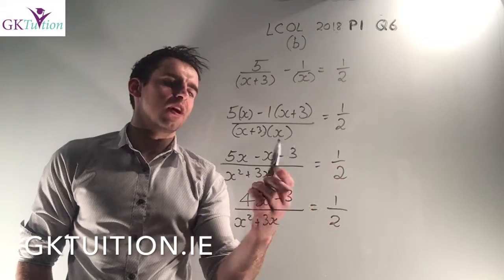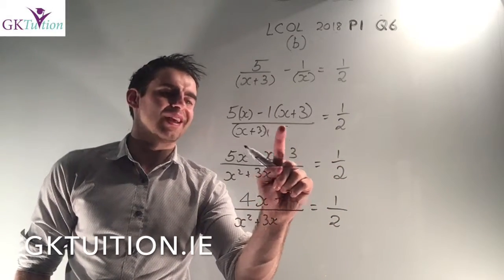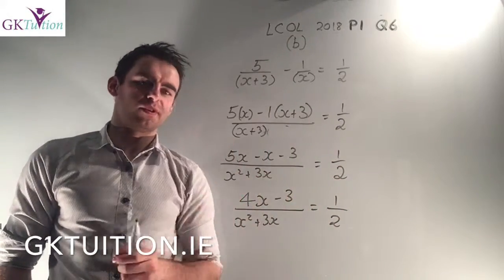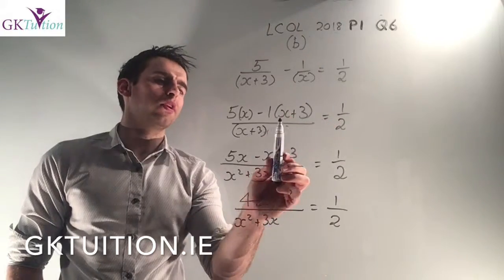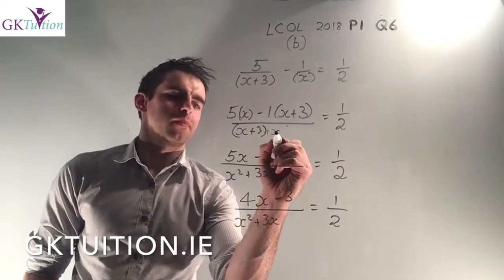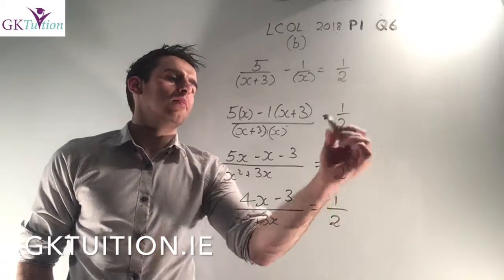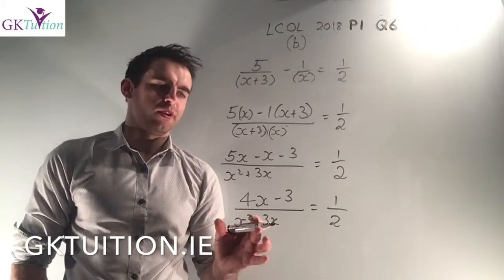x divides into the common denominator, well it cancels with itself and then I'm left with (x+3). Which means it's -1 times (x+3). And that's, so that's getting your common denominator. I'm leaving the right hand side as it is for the moment.